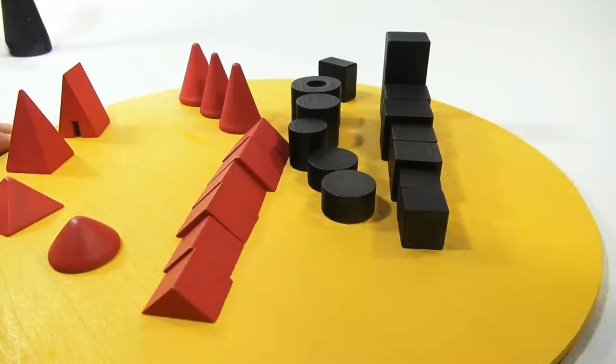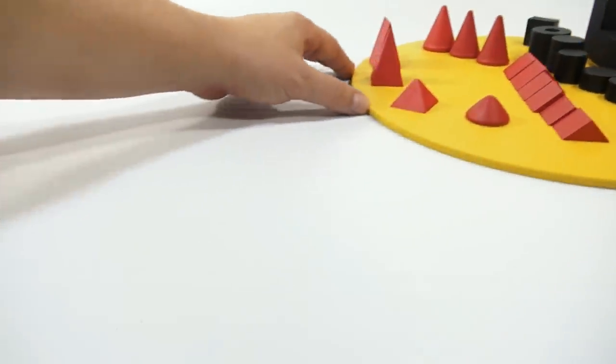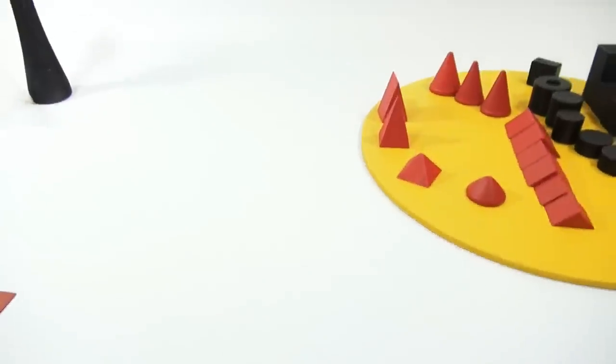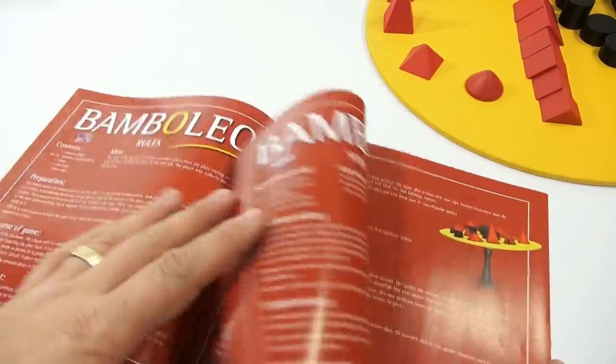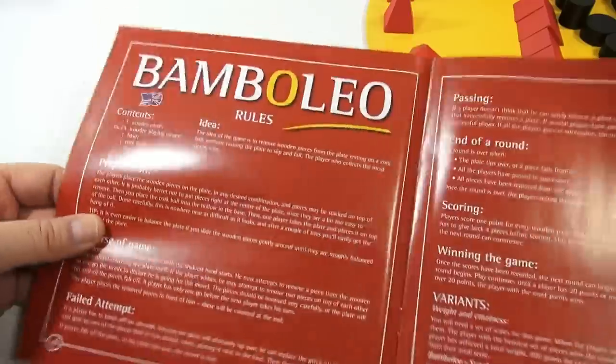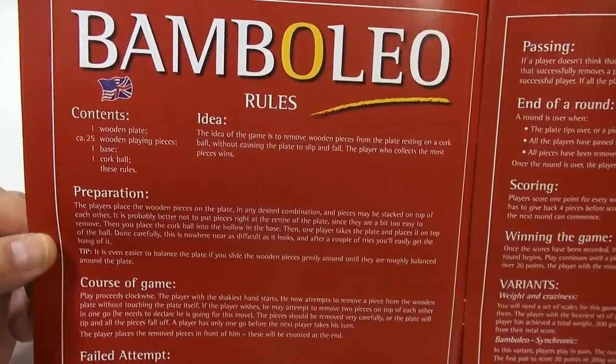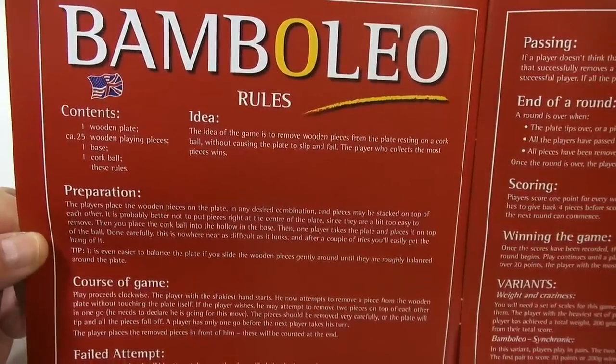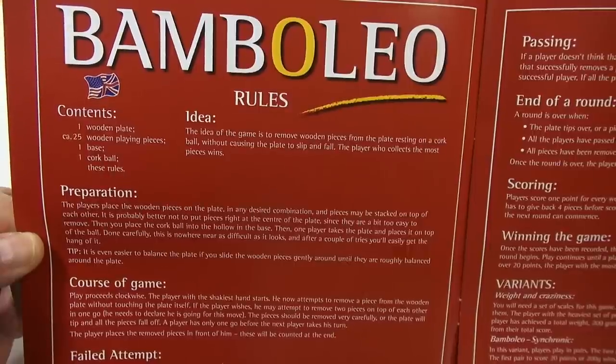All right, so basically let's go over the directions real quick. Let's move this out of the way. Not ready to play yet, we just got a good look at the board. Let's take a quick look. Here we go, here is our English version. Got the pieces. The idea of the game is to remove wooden pieces from the plate resting on a cork ball without causing the plate to slip and fall. The player who collects the most pieces wins.